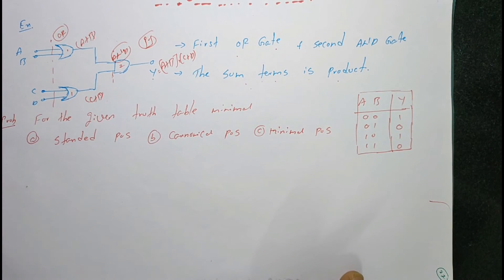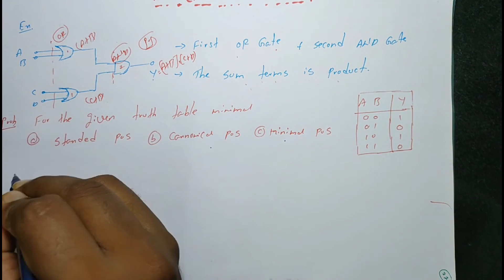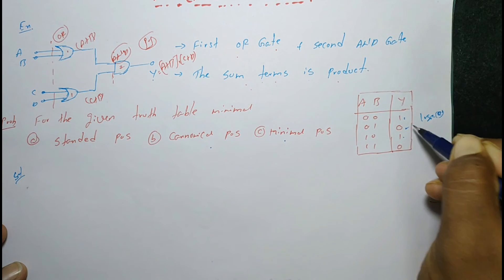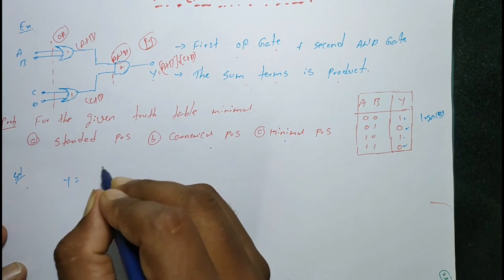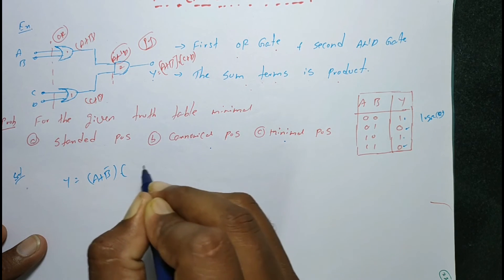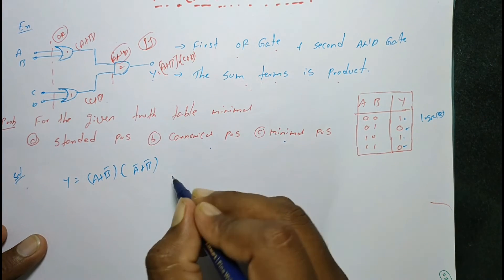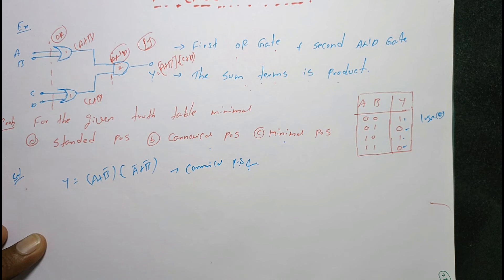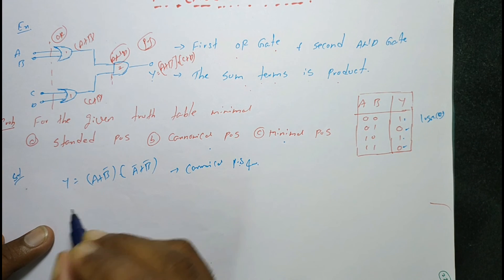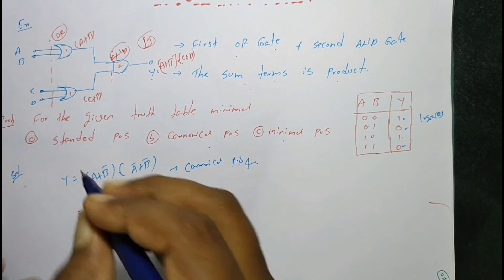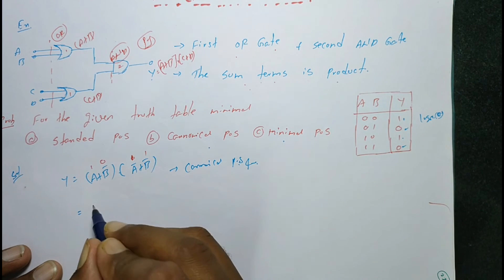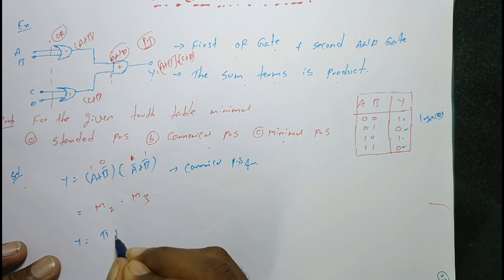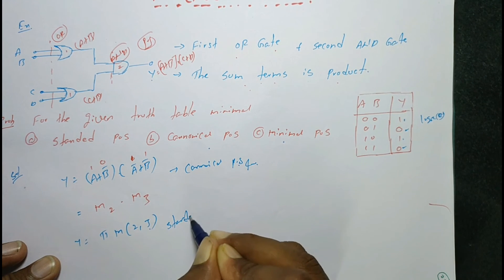Small problem: find the standard POS, canonical POS, and minimal POS. Given inputs 1 and 0 — this is a logic 0 operation, so we take only the 0 outputs. y equals (A + B̄)(Ā + B̄). This is the canonical POS form. For standard POS, the binary values 1 0 and 1 1 give M2 and M3, so y equals the product of max terms of 2, 3.